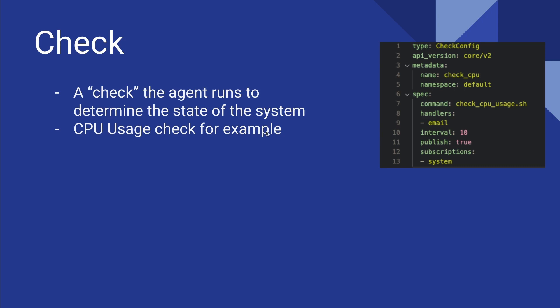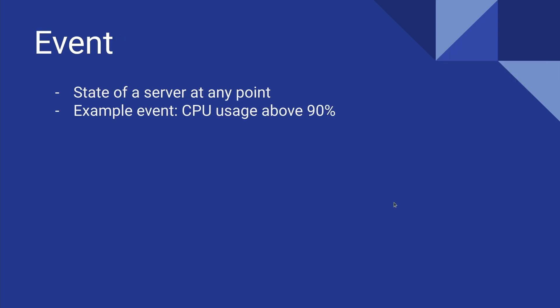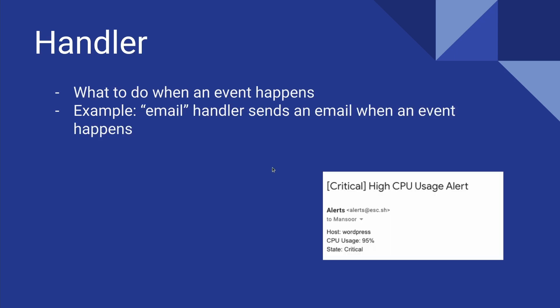The next term is a check. A check simply means something the agent runs on the system to determine the state of the system. An event is the state of a server at any point in time — for example, if our check runs and determines that the CPU usage is above a threshold, say 80%, it creates a warning event saying that CPU usage is above 80%. A handler is something that handles an event, for example sending an email if CPU usage is above a particular value.